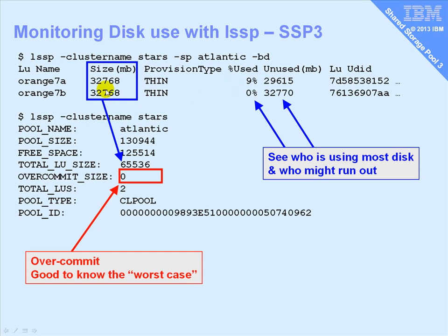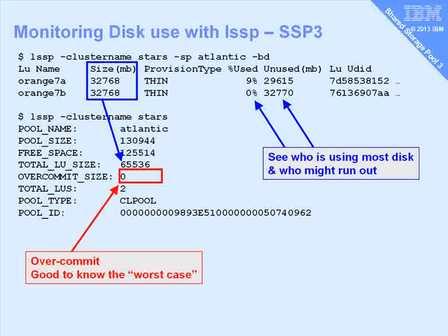It also has things in the cluster overview: we have the total of all spaces allocated, and we can see how much is actually used — about 5GB. There's a new extra column: the over-commit size. At the moment, if all LUs are fully used, I'm not going to have any space problems because I'm not over-committed. But if I start over-committing — assuming not everybody will use their disk space — then there's a worst-case scenario where if they do start using it, we're going to hit a problem, and this column tells me how much of a problem.